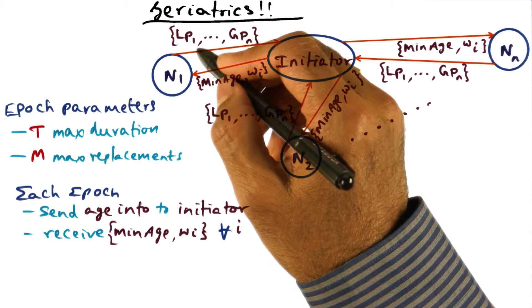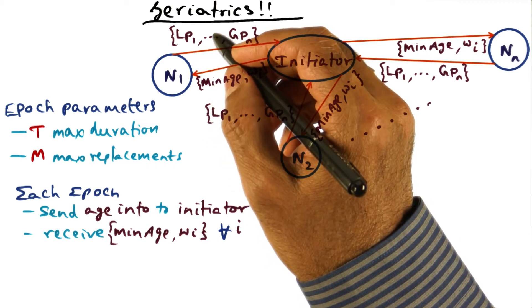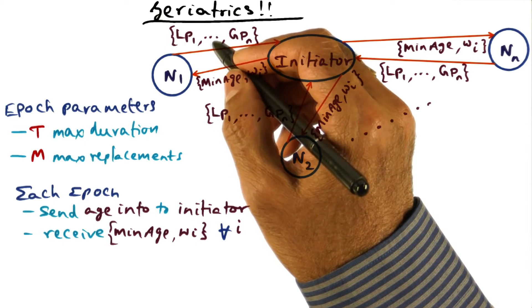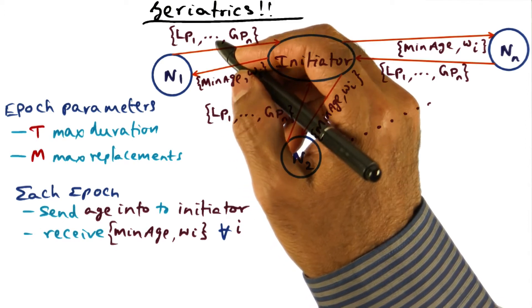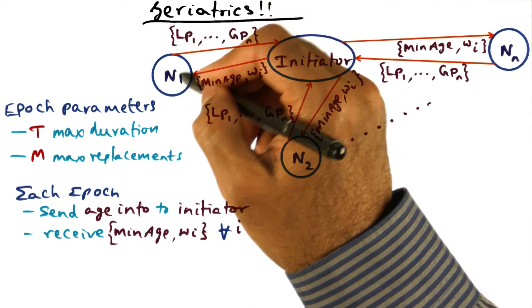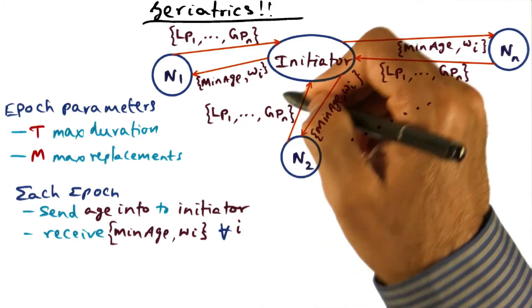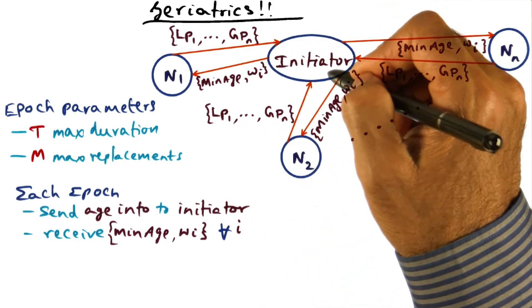And remember that the smaller the age, the more relevant the page is. So the higher the age, the older the page. So in picking a candidate, we're always going to pick an old page to replace. So that's the age information that each of these nodes is sending to the initiator.